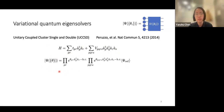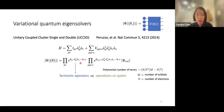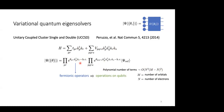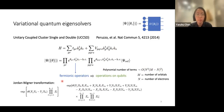The ansatz consists of terms of the same form as in the Hamiltonian, and the number of terms scales polynomially. Because this wave function is expressed in terms of fermionic operators, we need to map them to qubit operations. Using the common Jordan-Wigner transformation, these unitary operations involve Pauli matrices X, Y, and Z, resulting in very complicated expressions.